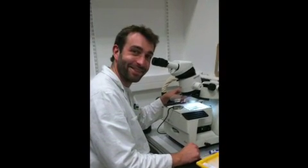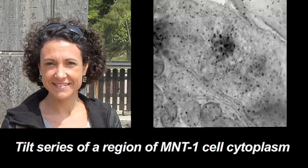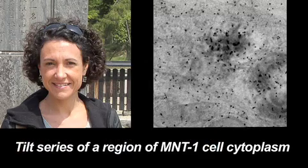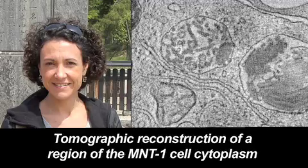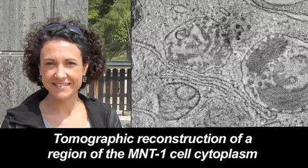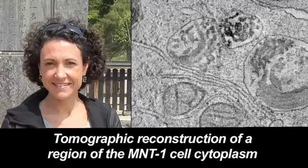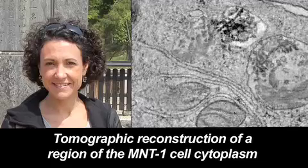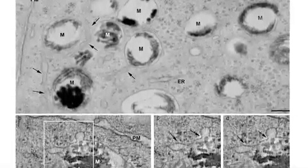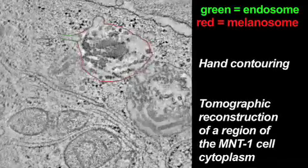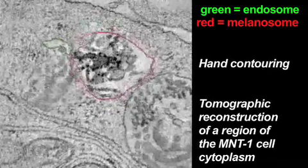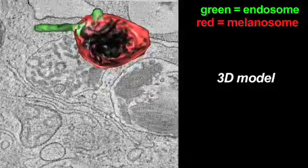To determine whether recycling endosomes and melanosomes do directly contact each other, Raposo and colleagues turned to a higher resolution approach. We have been really trying to explore different complementary electron microscopy approaches — immunolabellings, and now electron tomography — because only electron tomography allows us to visualise organelles in 3D, and in particular to see whether there are continuities between these endosomal tubules and the melanosomes. Thick sections of melanocytes were imaged from different angles and reconstructed into tomographic sections through neighbouring melanosomes and endosome tubules. Contours were drawn around the membranes in each section, which were then used to construct a three-dimensional model of the organelles.